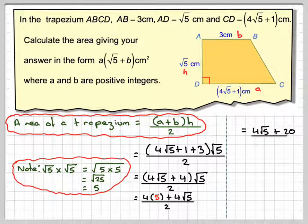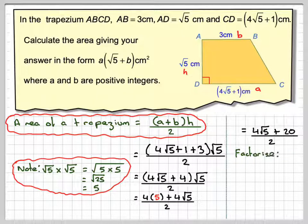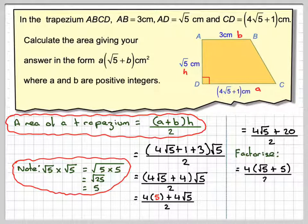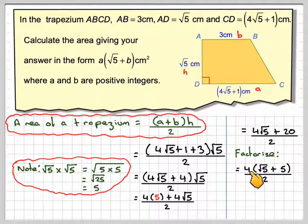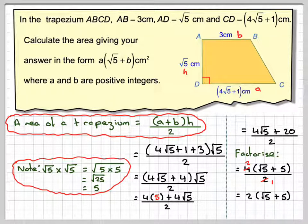Tidying that up: 4 times 5 is 20. Now take out a common factor of 4 from the numerator, giving 4 times bracket root 5 plus 5, divided by 2. You should always factorise first before trying to cancel — that 2 goes into the 4, leaving 2 brackets root 5 plus 5.